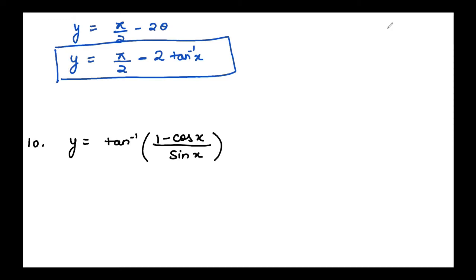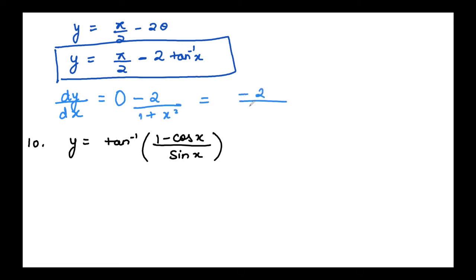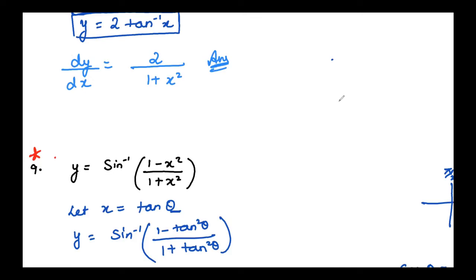So substituting x = tan θ: y = sin⁻¹((1−tan²θ)/(1+tan²θ)) = sin⁻¹(cos 2θ). Now write cos 2θ = sin(π/2 − 2θ), so y = sin⁻¹(sin(π/2 − 2θ)) = π/2 − 2θ = π/2 − 2 tan⁻¹x. Differentiating: dy/dx = 0 − 2/(1+x²) = −2/(1+x²).